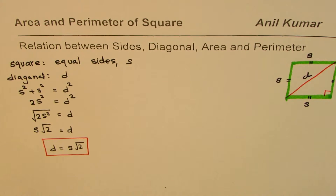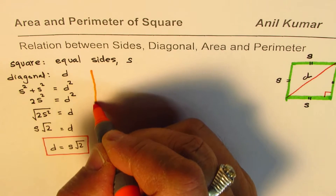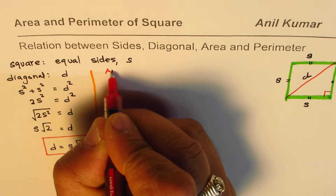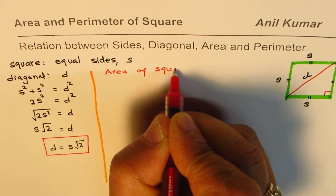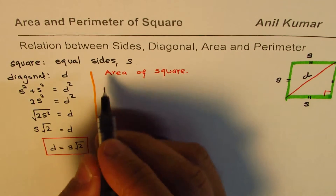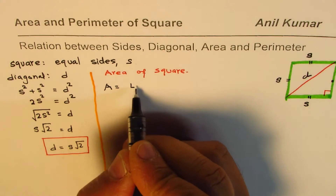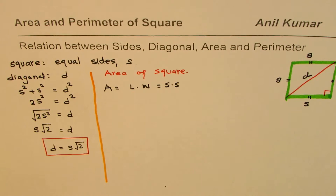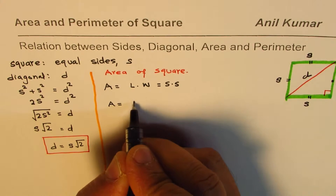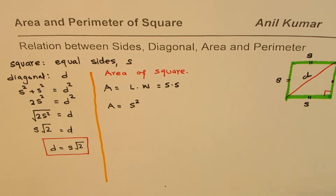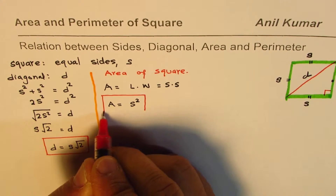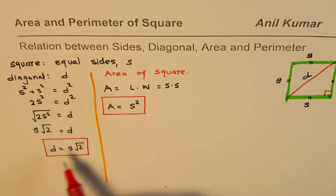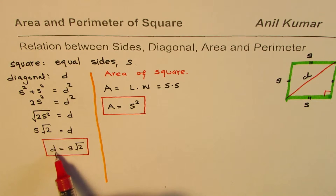Now let's look into area. The area of a square is length times width. Since both sides are equal, we write it as S × S, so the area of a square equals S², the side length squared. That's another important relation which relates area with the sides.